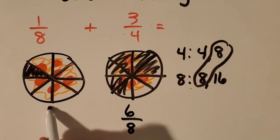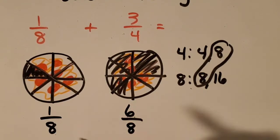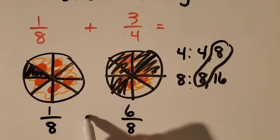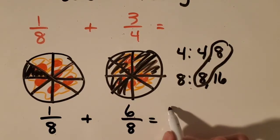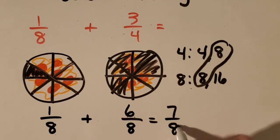That was easy. And I still have one-eighth over here. I don't need to change that one. And I can add that really easily. It equals seven-eighths.